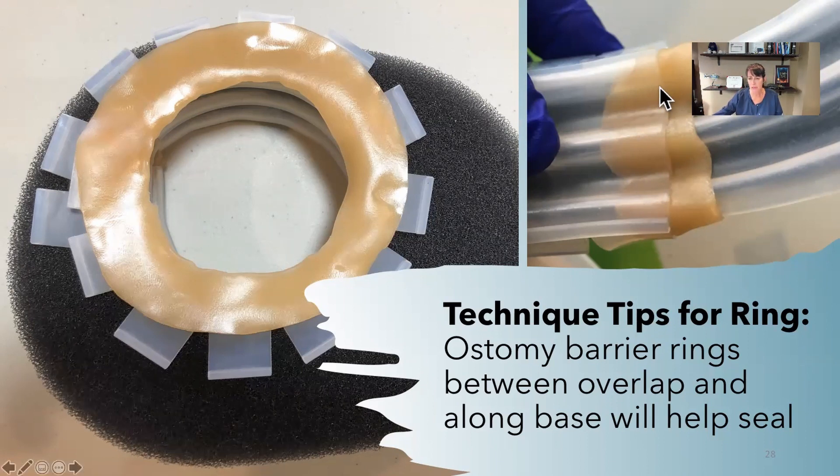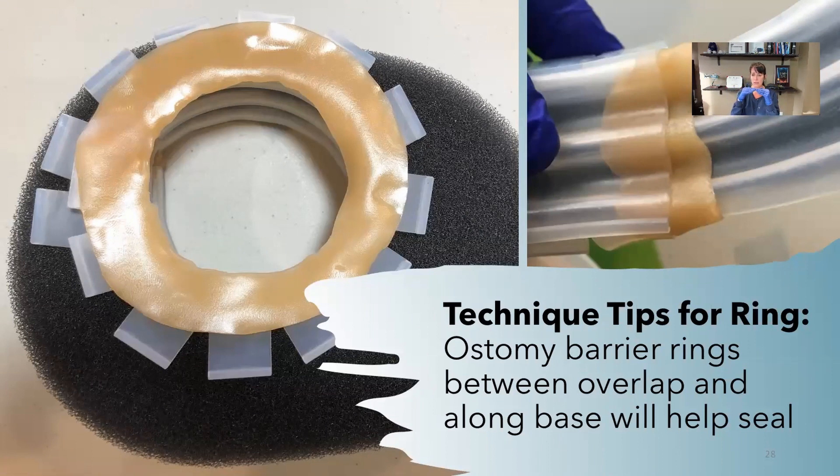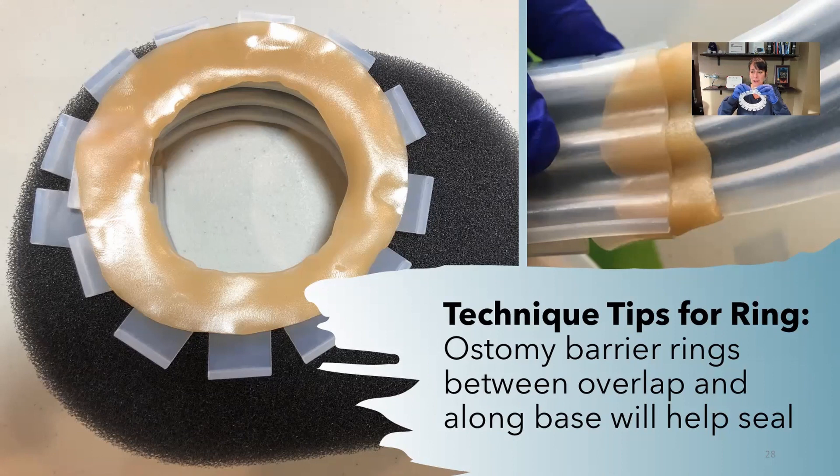This is probably the most important one right here is where it overlaps itself. You can't just bring it right up to itself like this. You actually have to have it overlap. On that overlap, you have to put that barrier ring. Otherwise, you'll never get a seal.